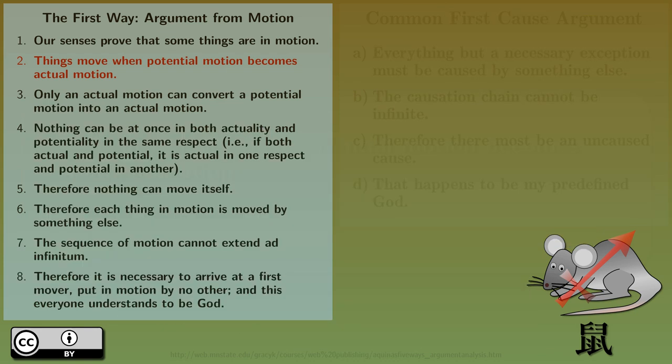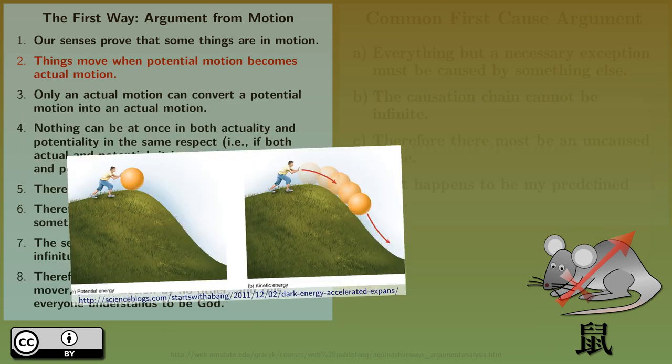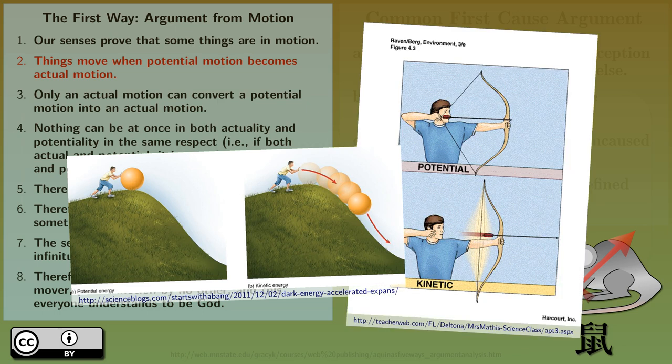Thomas Aquinas saw things from a perspective of a geocentric world view, where Earth is an absolute frame of reference and the only objects he perceived were accessible to his senses, rather than the dynamic world with no absolute frame of reference and ever moving subatomic particles. But let's see if we can update this premise. The closest thing I can come to actual motion and potential motion is kinetic energy and potential energy. Things move when potential energy becomes kinetic energy. Let's see if this works.